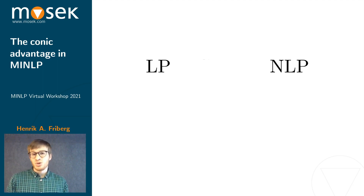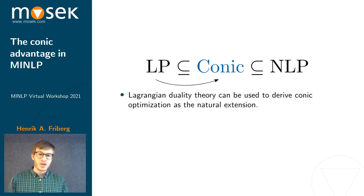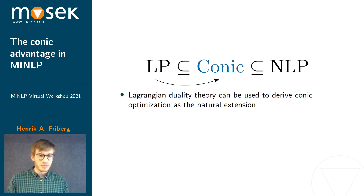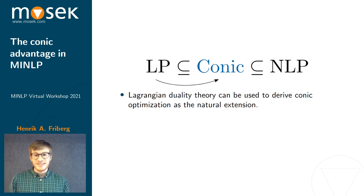It's therefore no surprise that conic optimization is a problem class in between. What may surprise you, however, is that Lagrangian duality theory, known and loved in linear optimization, can be used to derive conic optimization as the natural extension of results. This explains the many nice dual properties found in conic optimization.